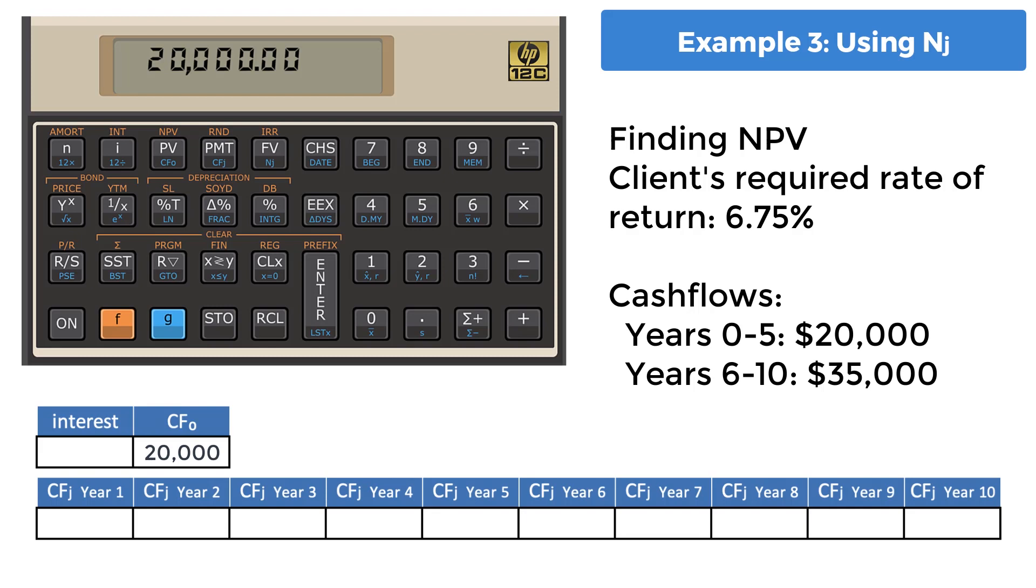Let's look at years 1-5. All values are the same, 20,000. And this is where using the NJ key will be helpful. Enter 20,000. Enter it into CFJ. Now enter 5, followed by prefix G and the FV key. Here is what just happened. 5 duplicates of 20,000 have been quickly entered into the CFJ list.